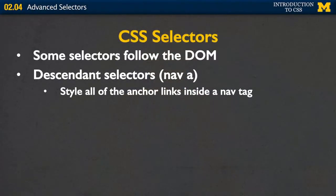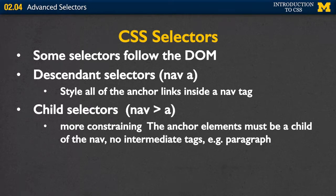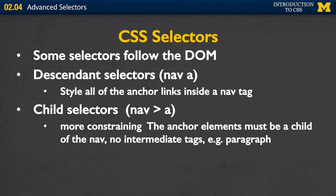We're going to utilize that to style just certain parts of your page. Descendant selectors let you say: if you're inside a nav tag, style all the links inside the nav tag instead of all of them. If you want to be even more specific, you can use child selectors. This rule says all the A links need to be direct descendants of the nav tag. If you have a paragraph with links inside it, those are ignored — they need to be directly underneath.